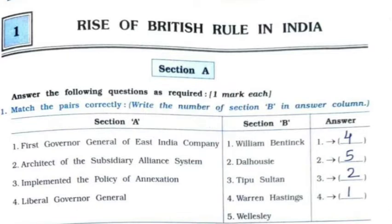The first question is Match the Following. First: First Governor General of East India Company — that is answer number four, Warren Hastings. Second: Architect of the Subsidiary Alliance System — option number five, Wellesley.